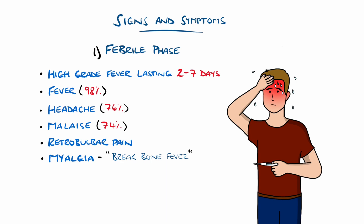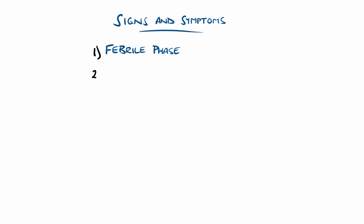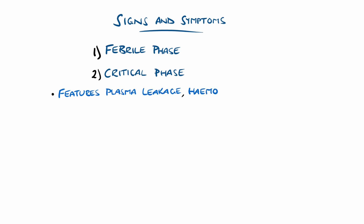There may also be nausea, diarrhoea, and skin flushing. Next is the critical phase, which features plasma leakage as well as potentially severe hemorrhage, shock, and organ dysfunction.